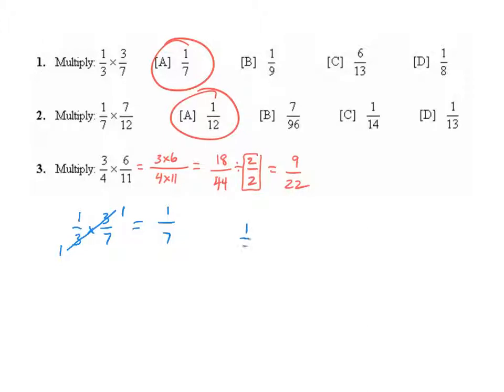On question number 2, 1/7 times 7/12, same thing - we could cross-simplify and pull out a 7/7. Get 1/1, which would give you straight to 1/12.